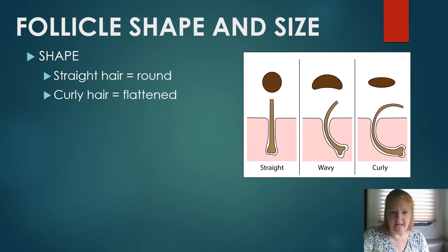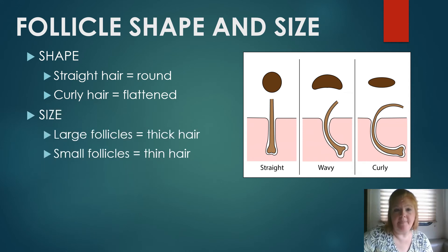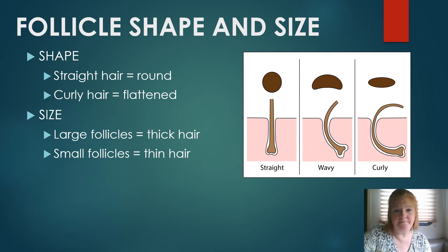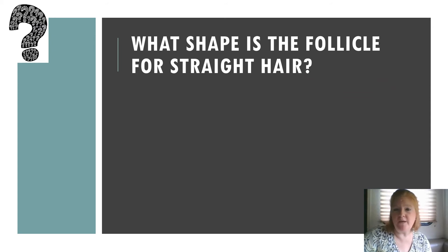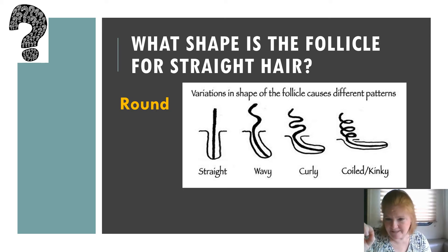Follicle shape and size both matter. If you have straight hair, your follicle is most likely round. If you have curly hair, the follicle is most likely flattened, and the kinkier the hair, the flatter the follicle. Size is also important: a large follicle produces thicker hair, while small follicles produce thinner hair. So hair can be straight and thick, or thin and curly.